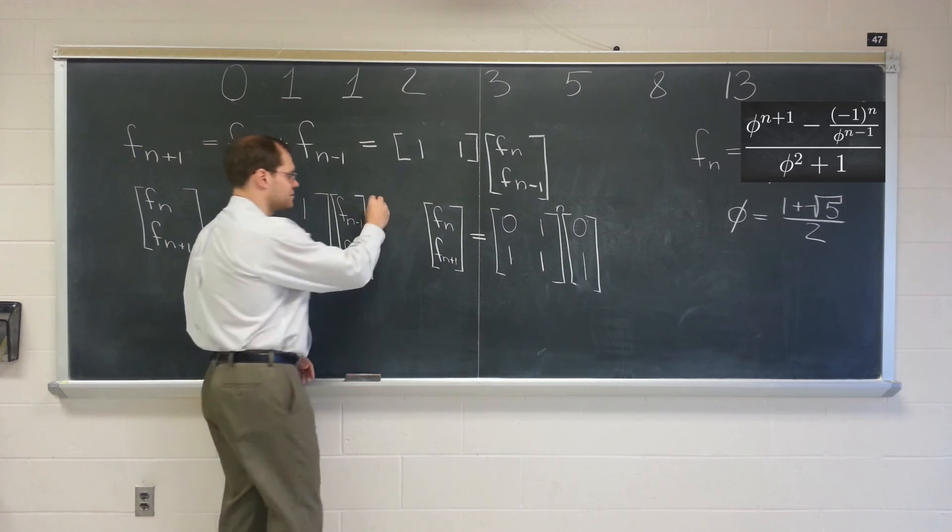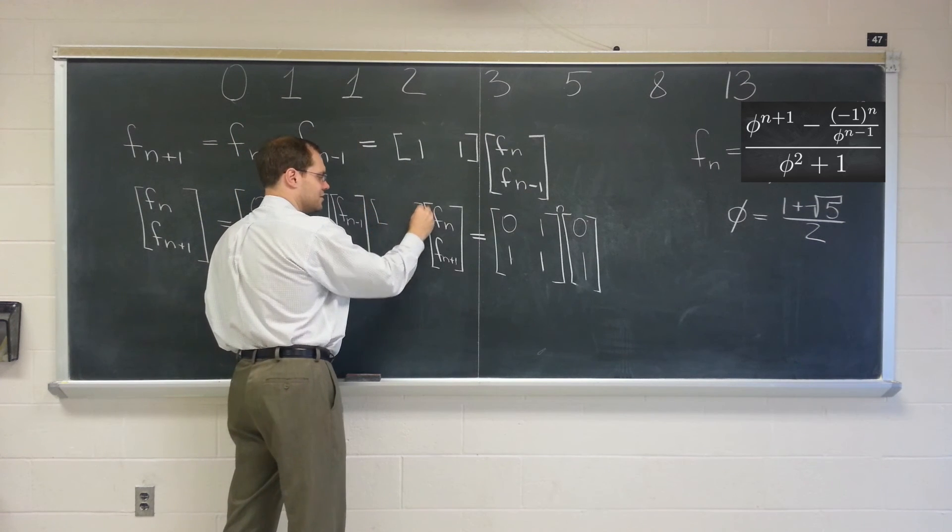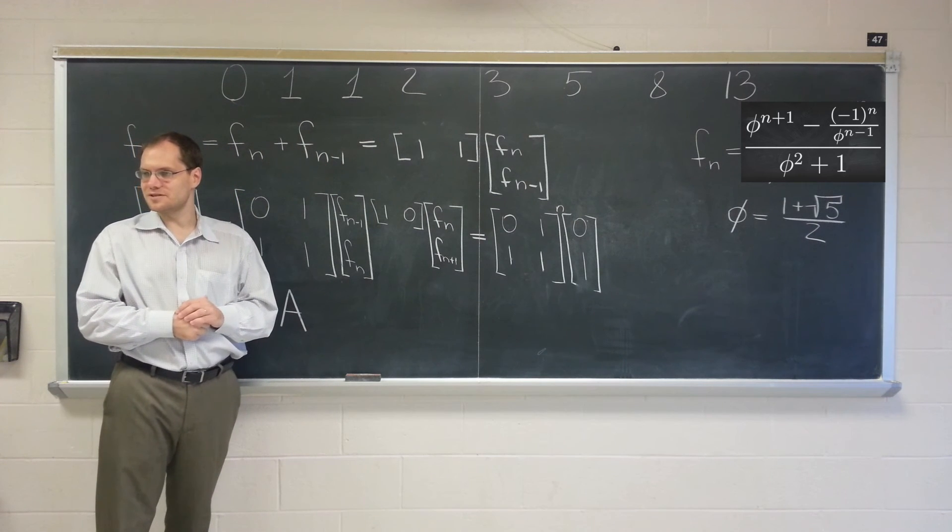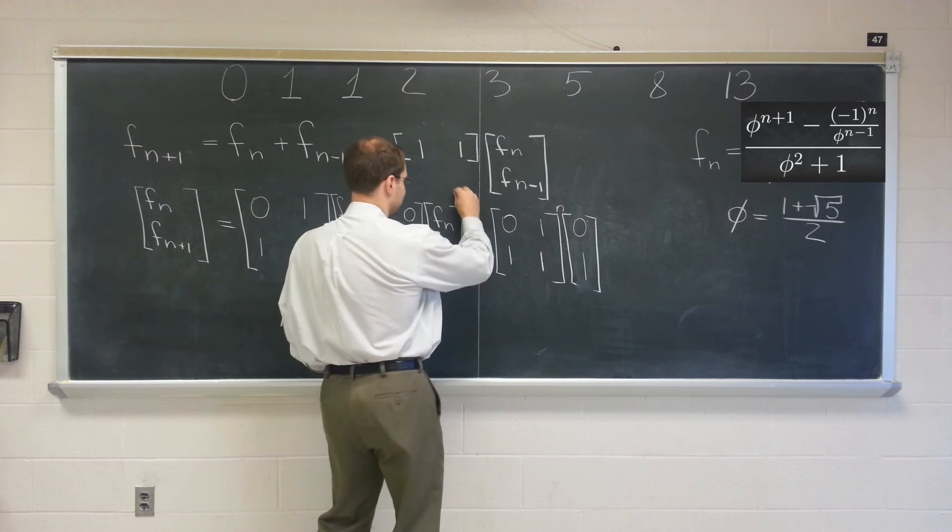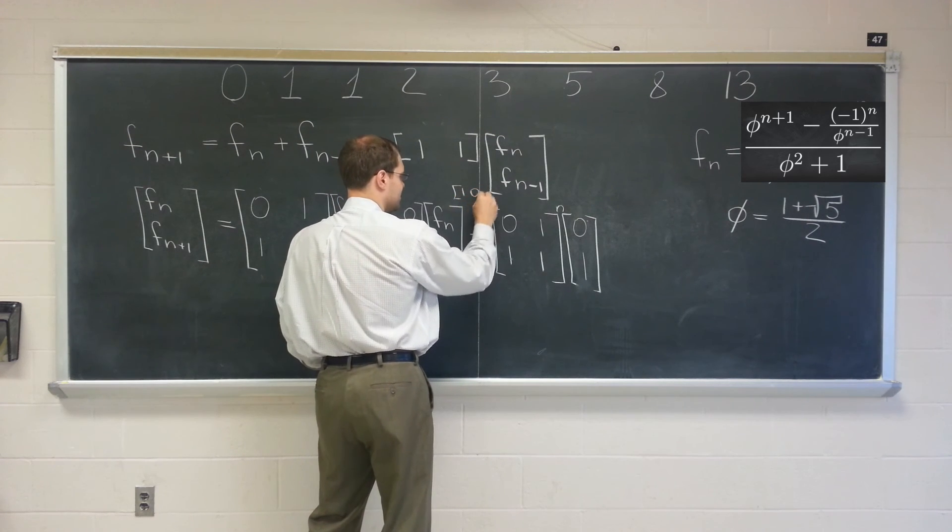How about this? Just multiply it on the left by 1, 0. You see how that works? How that works nicely? So stick it in here, 1, 0.